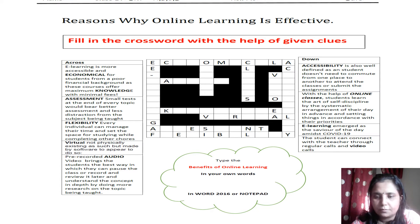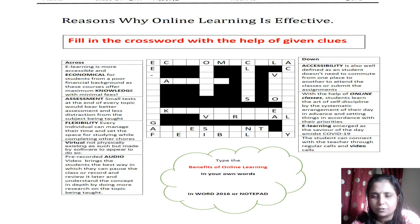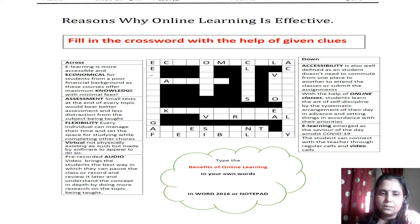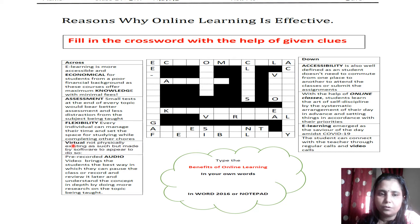Children, this activity is very simple — you have to solve a crossword. I know many people know how to solve a crossword, but for some people, you simply have to find the words from the across and down clues. For example, 'virtual' is given here and it is across, so you have to find it across: V-I-R-T-U-A-L. This is very simple.